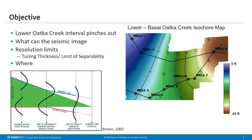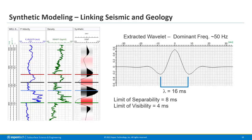The isochore map on the right-hand side is derived from well markers between the lower and Basal Oafta Creek interval. With the thinning we observe, we're going to have a lot of challenges with seismic data. From Alistair Brown's textbook on 3D seismic interpretation, a schematic illustrates the impact of thin beds on seismic data — why we can't image below the tuning thickness, and what the limit of visibility and limit of separability are. We also did this wedge modeling to see this impact specifically on our data. The extracted wavelet is about 16 milliseconds, giving a limit of separability of 8 milliseconds and a limit of visibility of 4.